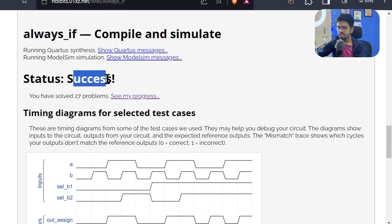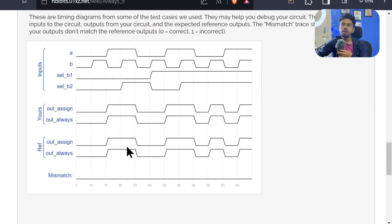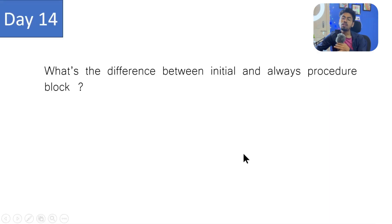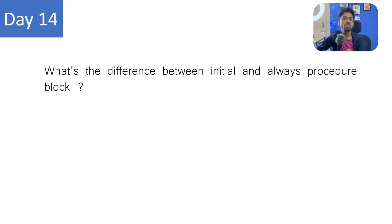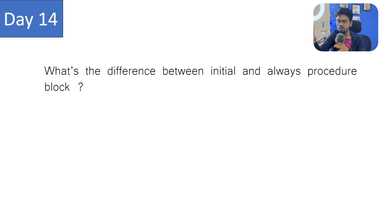This is a simple way we are doing if-else, but there is a dangerous way by which we can create many errors. Now is the time for today's question, and it is: what's the difference between initial and always procedural blocks? Please comment down your answer — it is needed. If you practice here then only you can execute those things in your interview. In our last lecture, day 13, we didn't have any questions so I'm not discussing those. I'll see you next class where we'll discuss the issue with if-else statement. Till then, keep smiling — tata bye bye.